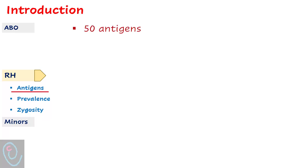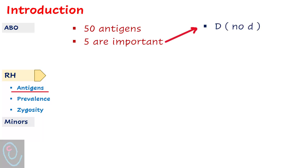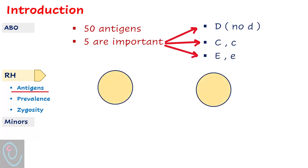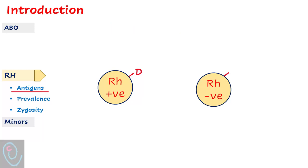The Rhesus system is the second most important blood group system. It consists of 50 antigens, but only five are important: D (capital), C (capital), c (small), E (capital), and e (small). A person who carries the D antigen is known as RH positive, while a person who does not carry the D antigen is known as RH negative.